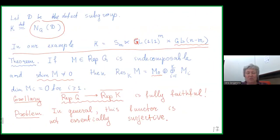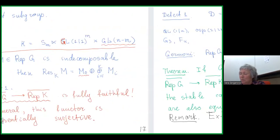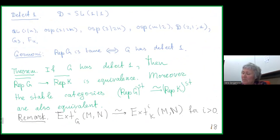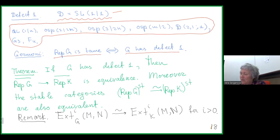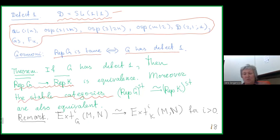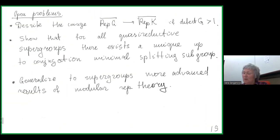That is what I wanted to say about the first result generalizing Theorem A about finite groups. For the second result, we consider so-called defect-one supergroups, where the splitting subgroup is just SL(1|1). For example, GL(1|n) is a simple defect-one Lie superalgebra. There is a result of Sherman that the representation theory of G is tame if and only if G has defect one. Our theorem is that in this case we have not only an equivalence of semi-simplifications but an equivalence of stable categories.